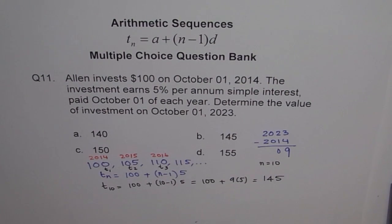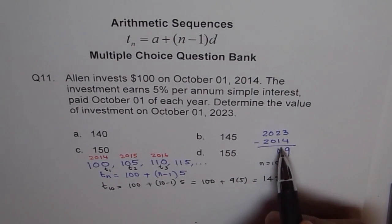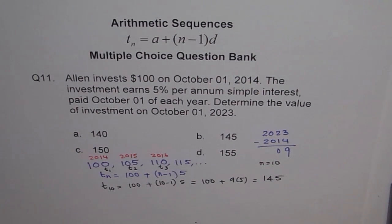But when we do 9 minus 1, we get 8. So that is what it is and that is how we will be relating it. There are 9 numbers. So there are 10 years between 2014 to 2023. That is how it is.